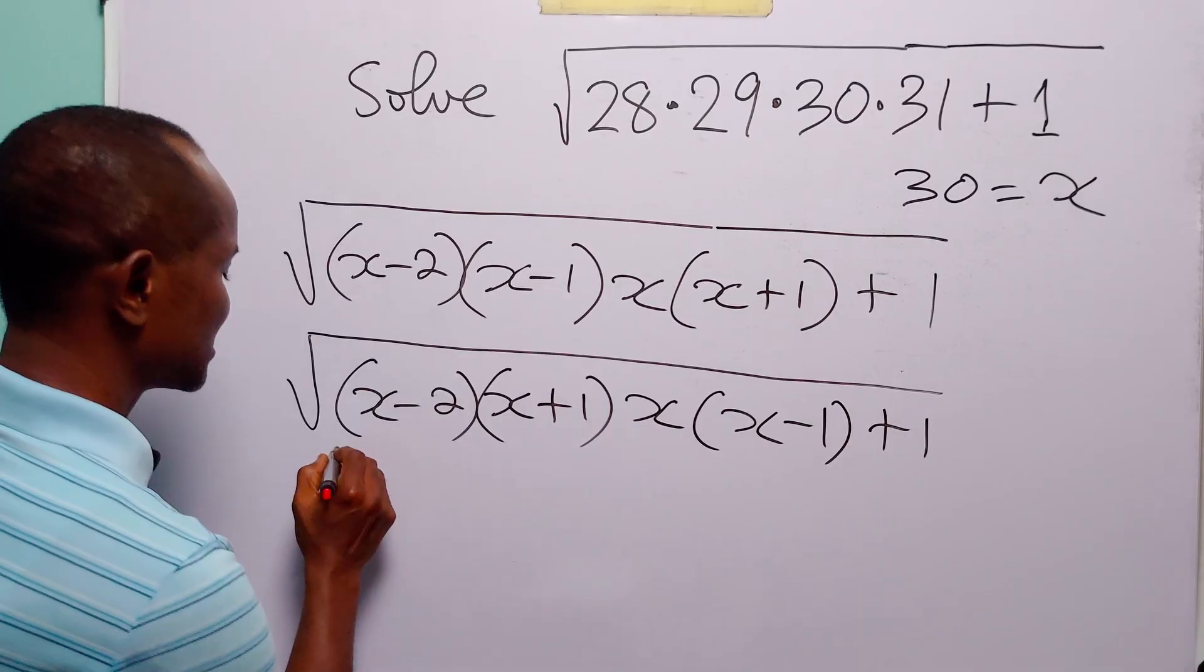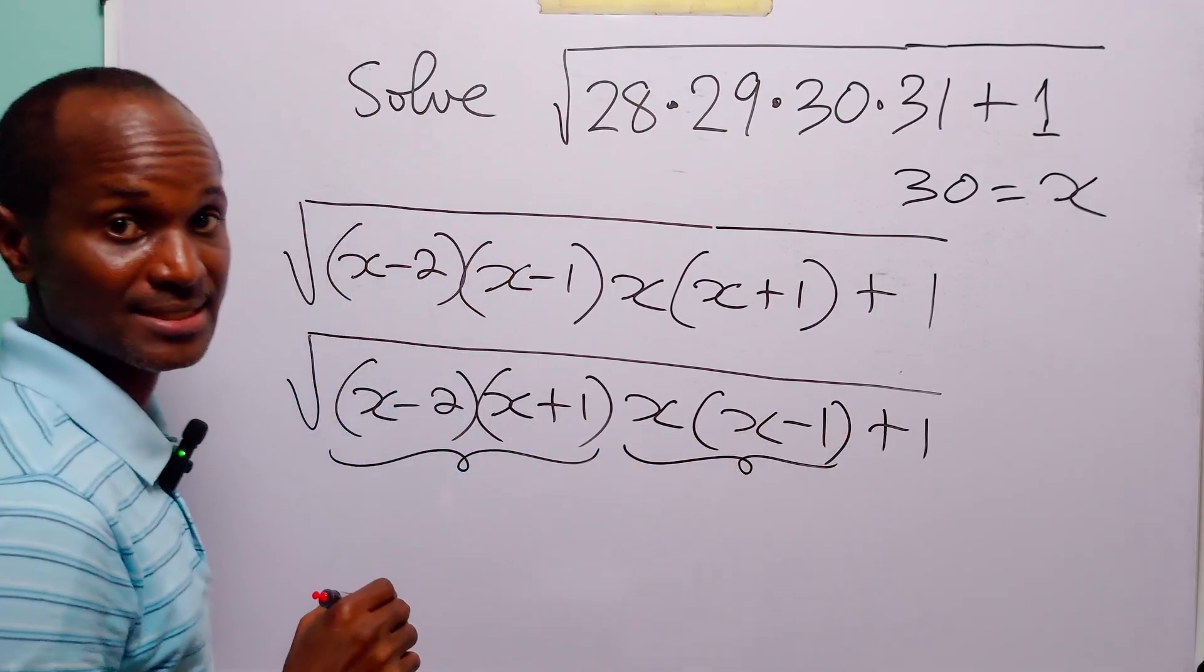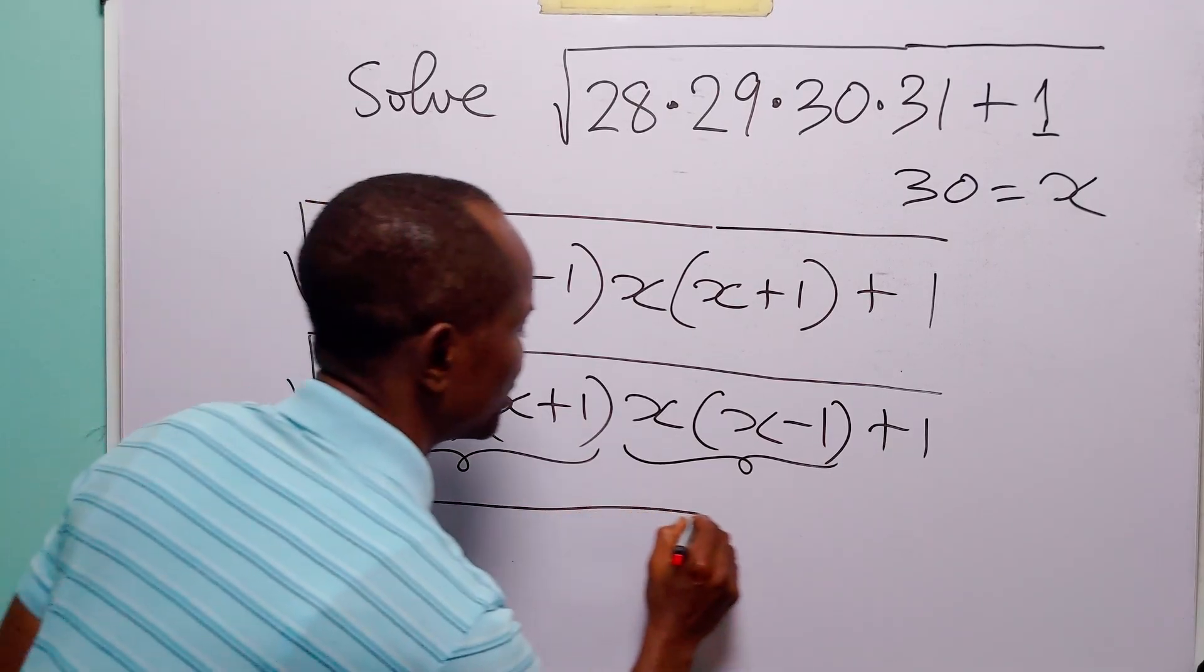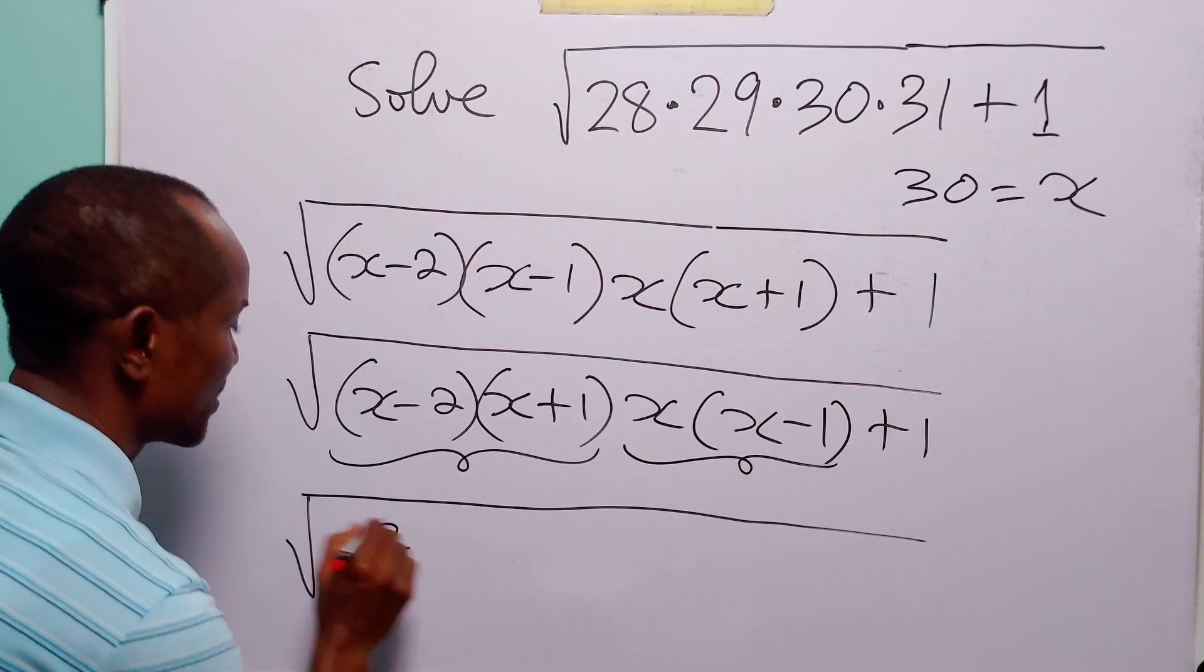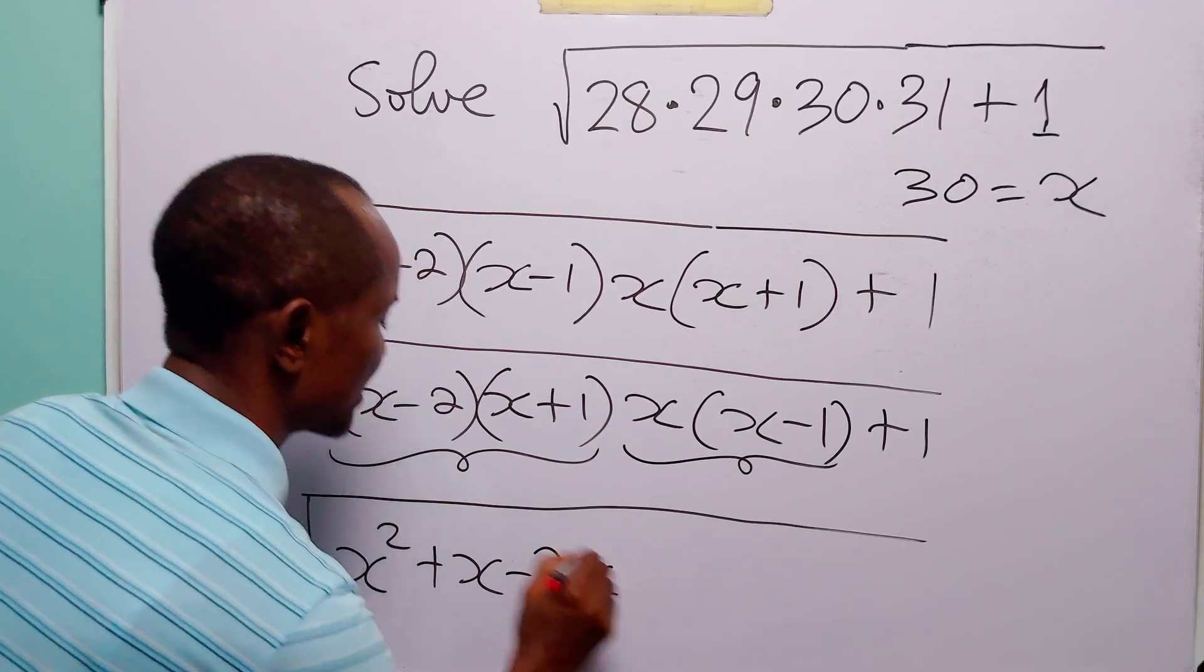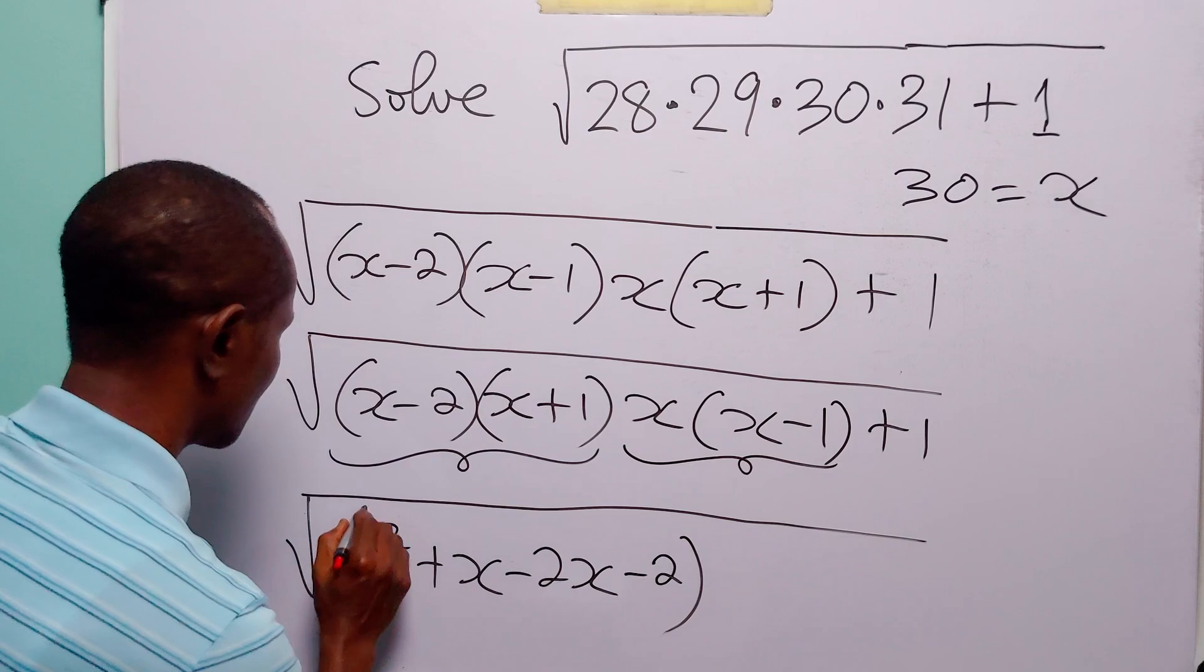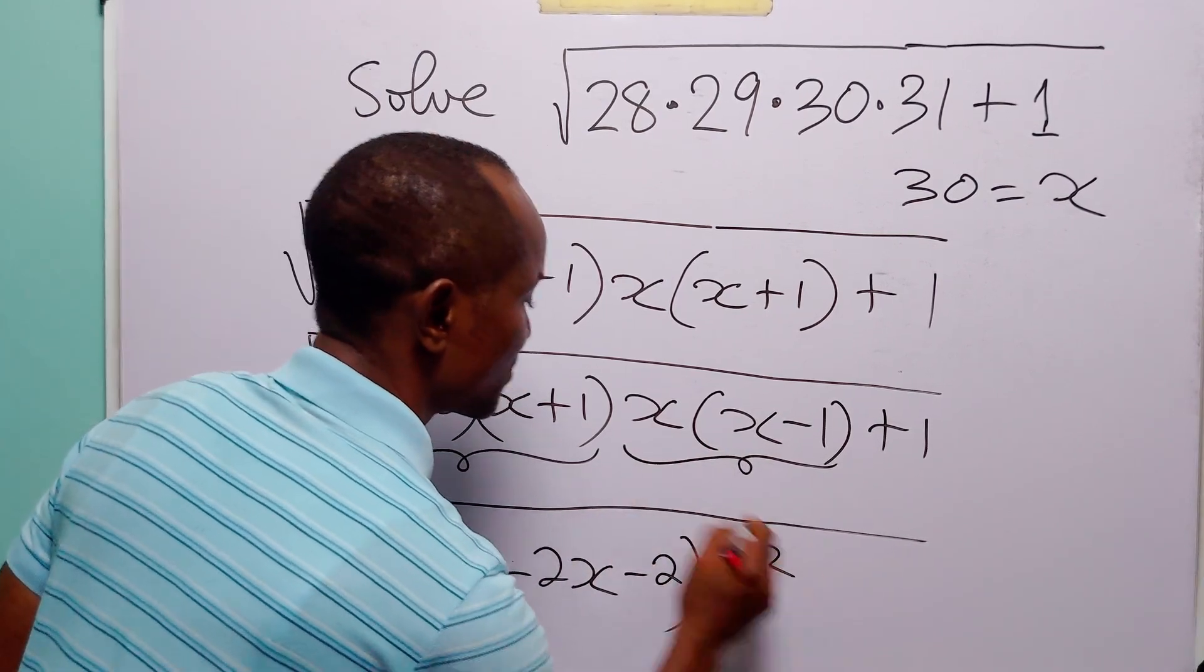Now what we are going to do is that we will expand this and then we will expand this. So when we do that this square root becomes x times x is x squared. x times 1 is x. Minus 2 times x is minus 2x. And minus 2 times 1 is minus 2.